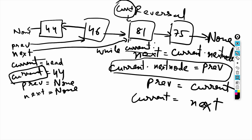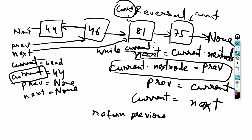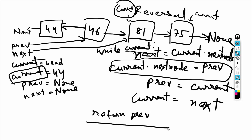When the loop ends, we return previous. The reason is that current will have reached 75, and we will have stored current into previous — so previous will hold 75, which is our new head. All the links will have been reversed, and returning previous gives us the new head of the reversed list.